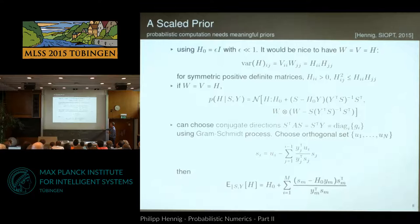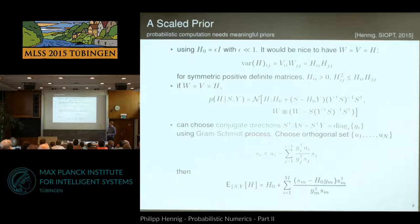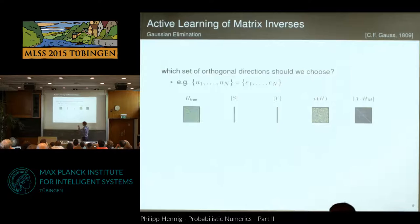The only thing left is how to choose S — I need to start with a set of orthogonal vectors, after which everything is automatic. What's your favorite set of orthogonal vectors? The unit vectors. So we'll choose them to be the standard basis vectors: 1,0,0,..., 0,1,0,..., and so on. Let me show you how this algorithm works.